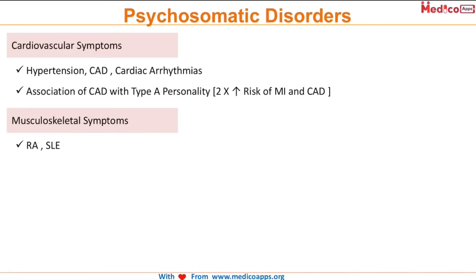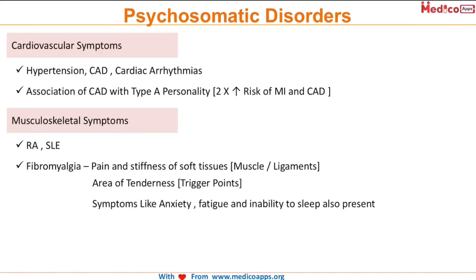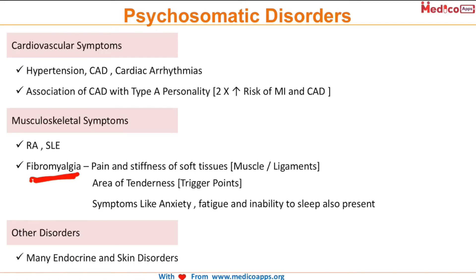In the musculoskeletal system, diseases like rheumatoid arthritis and SLE are aggravated by stress. Fibromyalgia is a classic psychosomatic disorder featuring pain and stiffness of soft tissues, muscles, and ligaments, trigger points, along with anxiety, fatigue, and inability to sleep.